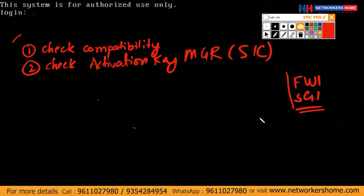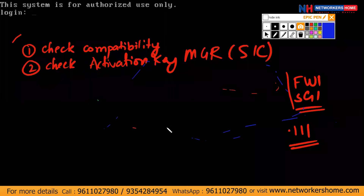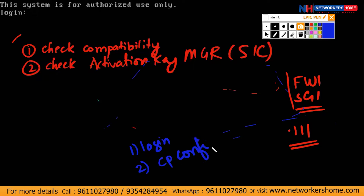It's IP is 111. I'm now going to change its password. Firstly, I have to log in, and secondly I will type CP config, which will give me a lot of options. Let's check that out. I'll be typing admin and my password is admin123. I'm logged in.